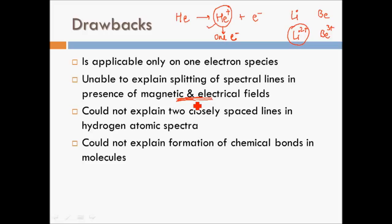Bohr could not explain the formation of chemical bonds in molecules. His model was applicable only to one-electron species, but atoms combining to form chemical bonds can have 10 or even 20 electrons. Since he could not explain the atomic structure of species with more than one electron, he could not explain bond formation either.